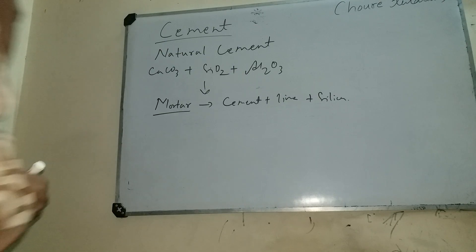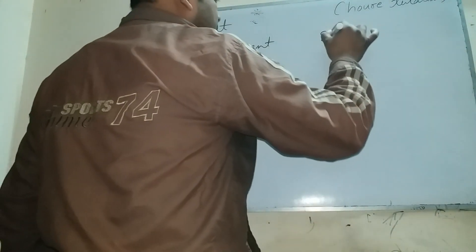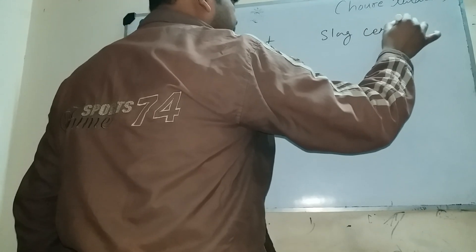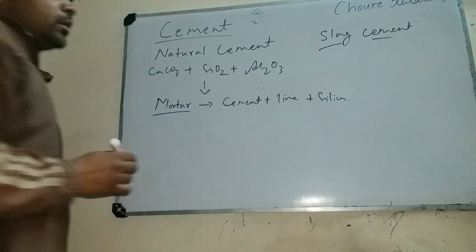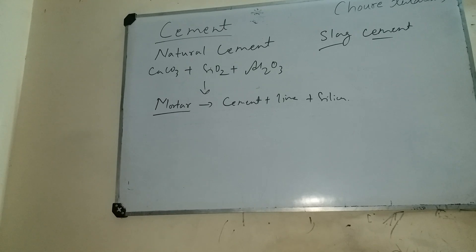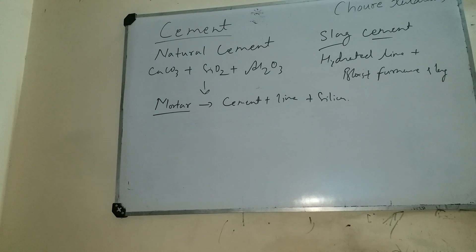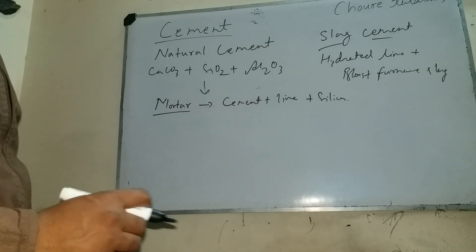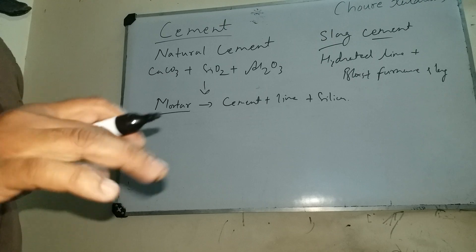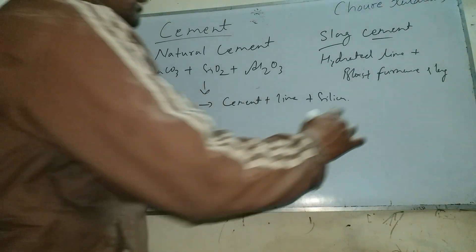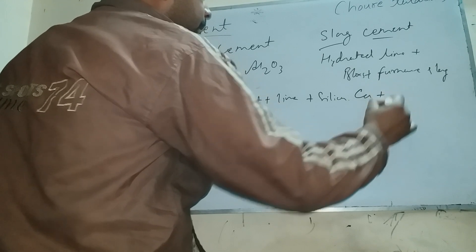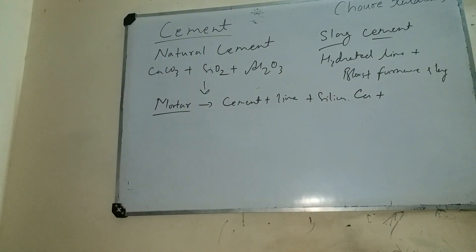Now we are going to discuss about slag cement. The slag cement is basically hydrated and blasted slag. The slag is calcium and aluminum silicate — that is the composition of slag.